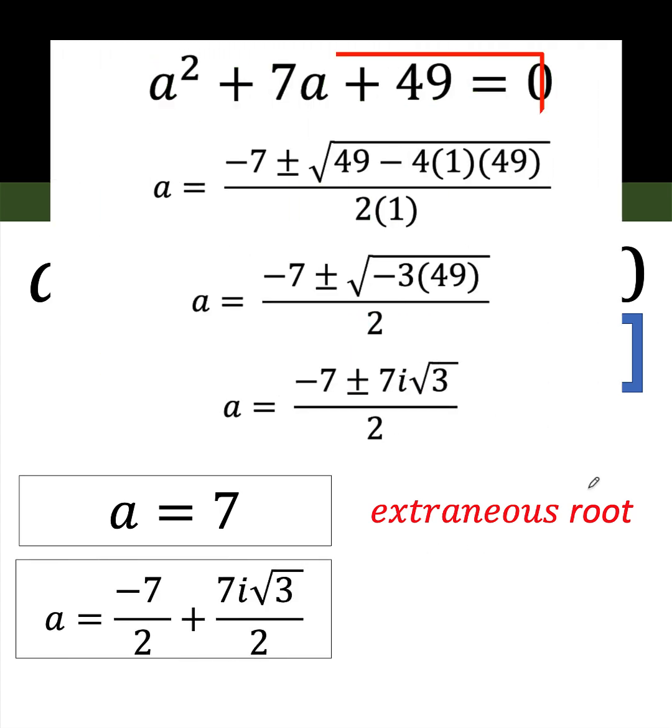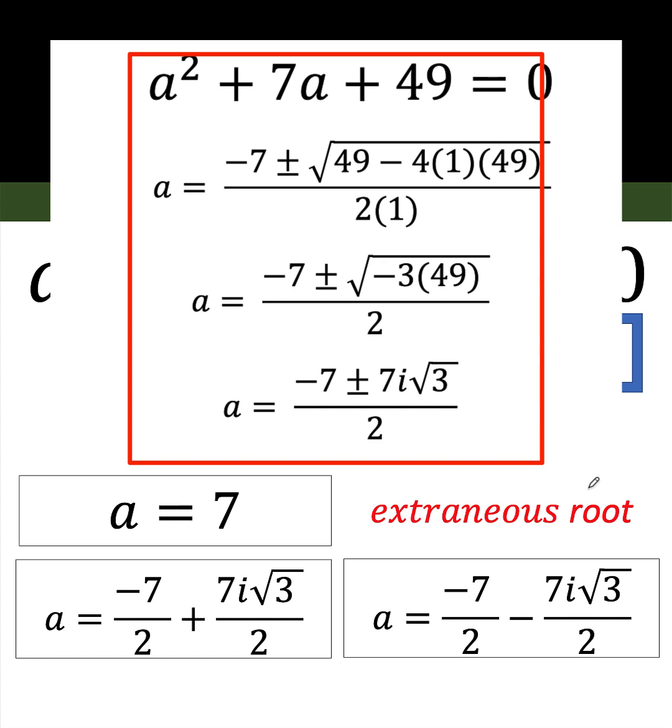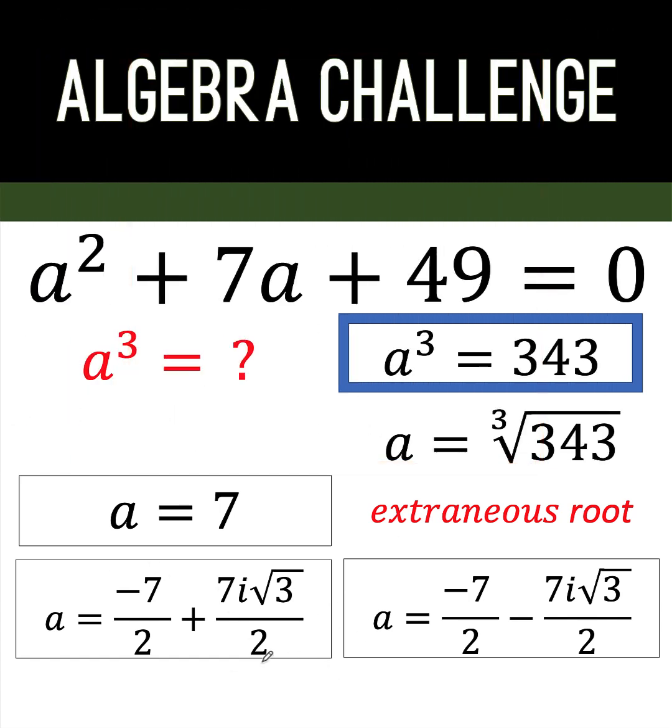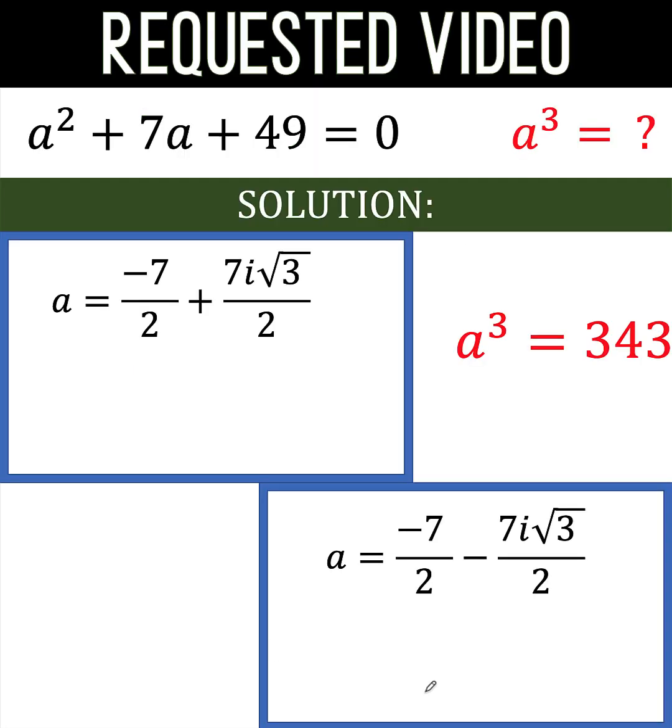The other two roots are the values we arrive at when we solve for this equation using quadratic formula. And if we are going to take the cube of these two roots, if our answer is correct, we must be able to get 343 when we cube each of these two binomials.